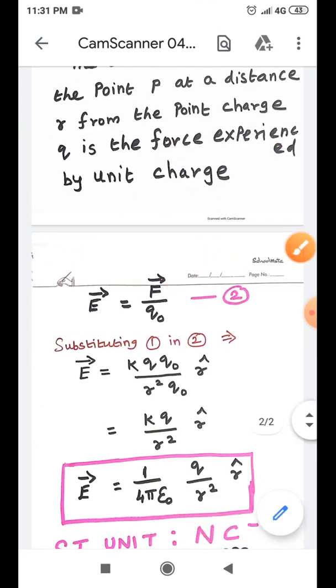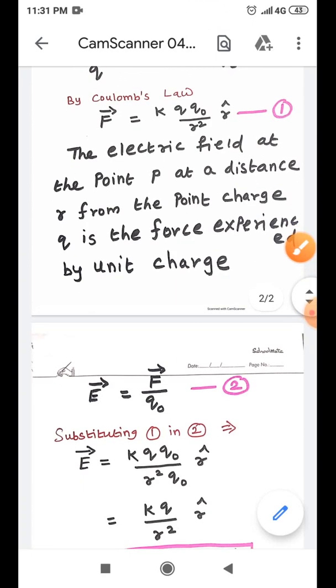So, let us take it is equation number two. So, now substitute equation number one and two. Then, you will get f or greater than unit equation one. You will get e vector which is equal to k q q0 divided by r square q0 r cap.